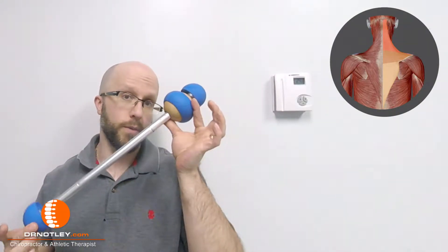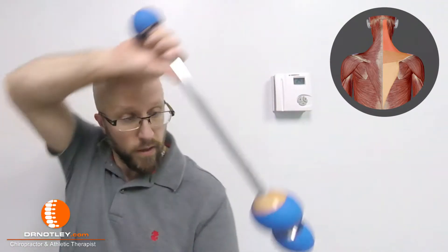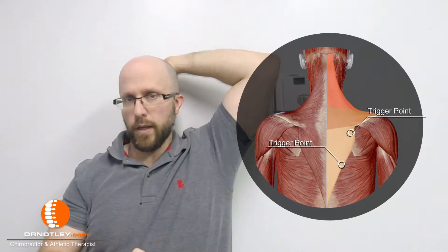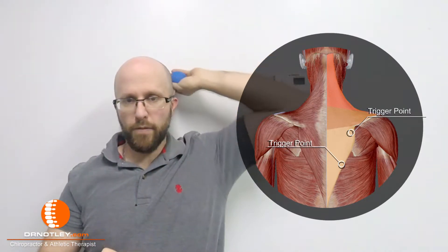To release the lower trapezius muscle, we can use a stick with a ball on the end, or a ball inside a sock. Place it behind your back, and you're going to try and get either close to the medial edge of the shoulder blade, or somewhere along the outer edge of the trapezius. Those are typical spots where we find the trigger points.